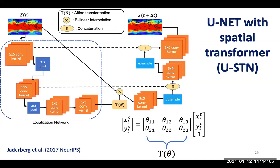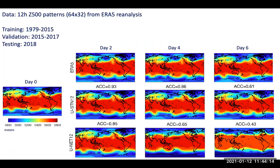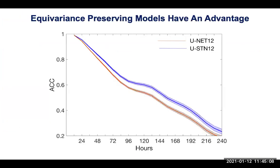By doing this, we ensure that the architecture, at least in the latent space, is equivariance-preserving. For physical systems, this makes a lot of sense because large scale vortices rotate in space and time, and we want our architecture to capture these rotations by construction. We call this model USTN — the equivariance-preserving net. Results trained on 12-hourly Z500 patterns from the ERA5 reanalysis, with training on 1979–2015, validation 2015–2017, and testing on 2018 data. USTN does better than the U-Net architecture, and things like Rossby wave breaking are captured better by the equivariant-preserving architecture.